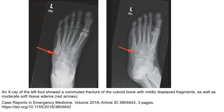In this case, the x-ray demonstrates a comminuted fracture of the cuboid bone with a mildly displaced fragment, as well as moderate soft tissue edema.